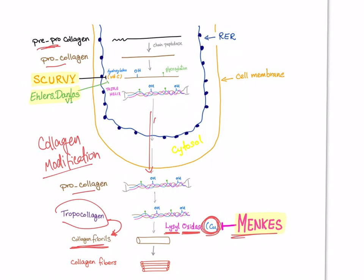A defect in this step is the pathogenesis of Menke's disease. There is a deficiency in copper, so lysyl oxidase cannot work. We cannot convert tropocollagen into collagen fibrils — we have no collagen fibers, which is a disaster.